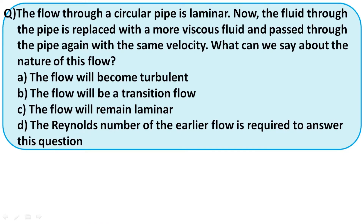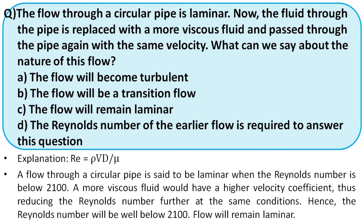First question: the flow through a circular pipe is laminar. Now the fluid through the pipe is replaced with a more viscous fluid and passes through the pipe again with the same velocity. What can we say about the nature of this flow? Recall that Reynolds number is ρVD/μ.